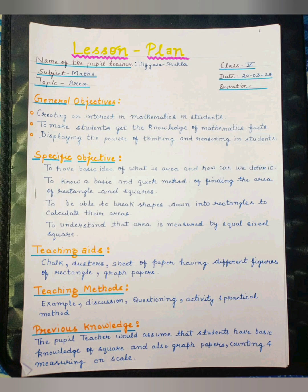Teaching aids: Chalk, Dusters, Sheet of paper having different figures of rectangle, Graph papers. Teaching methods: Example, Discussion, Questioning Activity, and practical method. Previous knowledge: The teacher would assume that students have basic knowledge of square and also graph papers counting and measuring on scale.